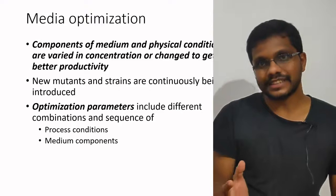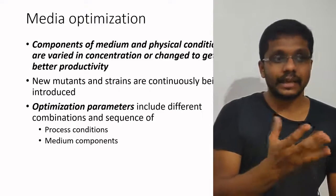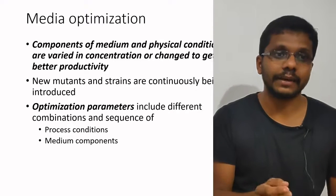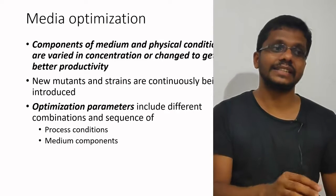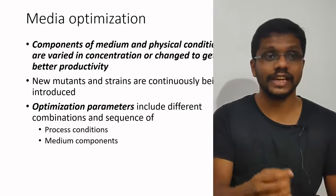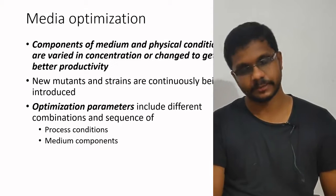In this video I am going to talk about media optimization. Media optimization is basically the formulation of optimum medium for the product formation, and an optimized medium should support maximum product formation. Media optimization can be defined as: components of a medium and physical conditions are varied in concentration or changed to get better productivity.